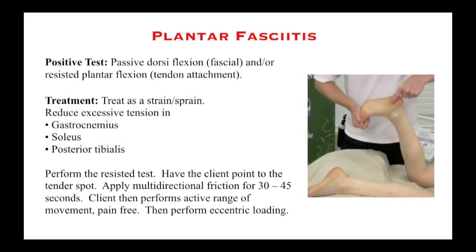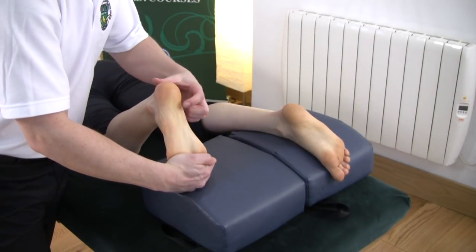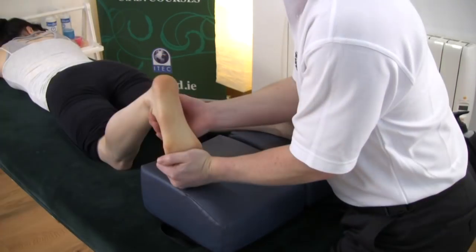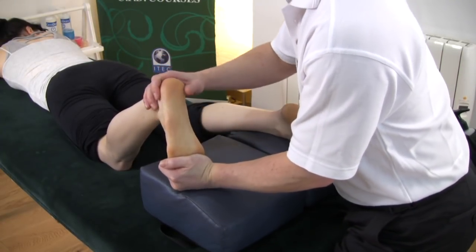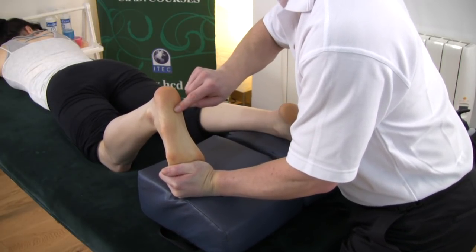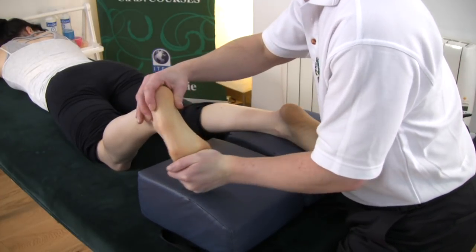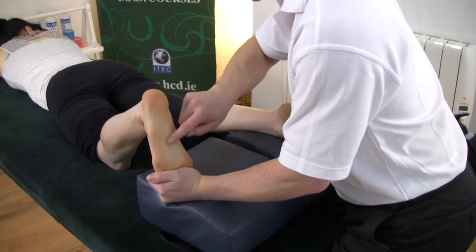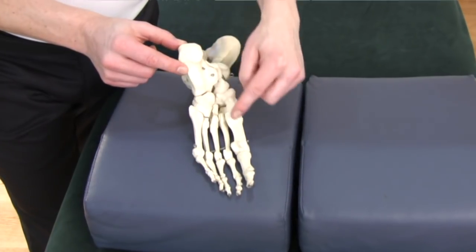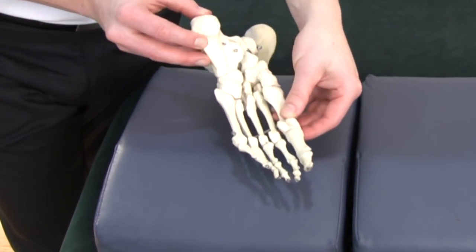How do you test for plantar fascia involvement? A positive test would be dorsiflexion — if it's primarily fascial. You can increase the resistance by bringing in a resisted plantar flexion, which pulls on the tendinous attachment. As the client tries to push their toes towards the ceiling with the knee bent, gastrocnemius is relaxed while soleus and a little posterior tibialis are tensioned, pulling on the heel and increasing stress in the area between the calcaneum and the metatarsal heads.